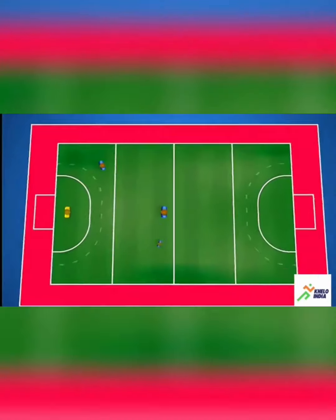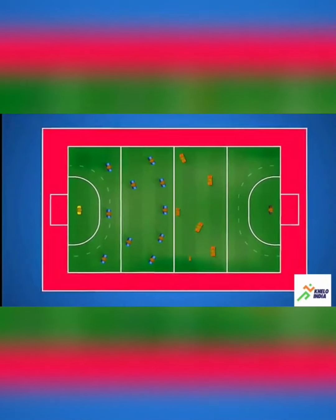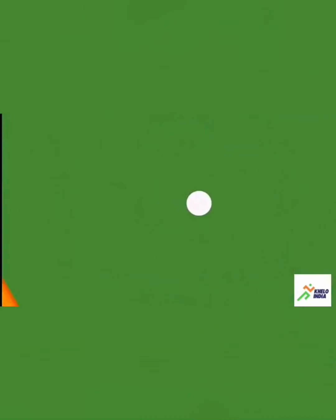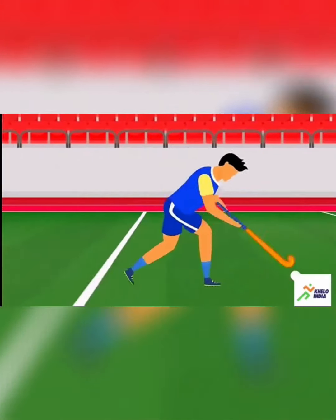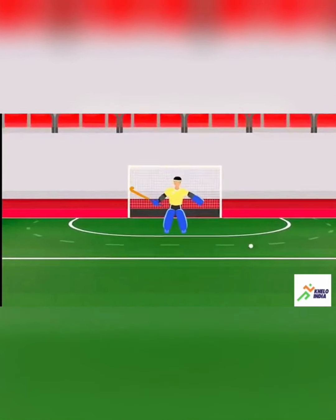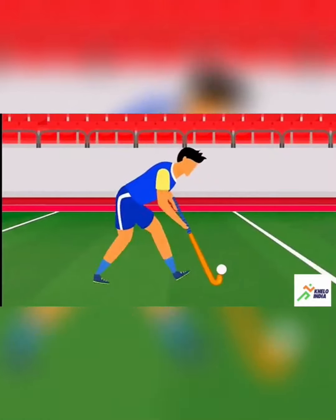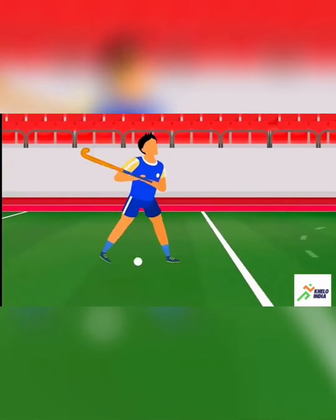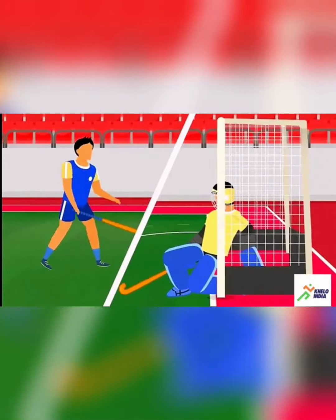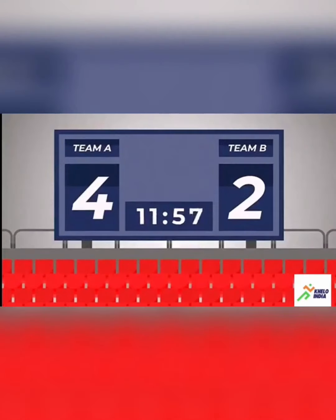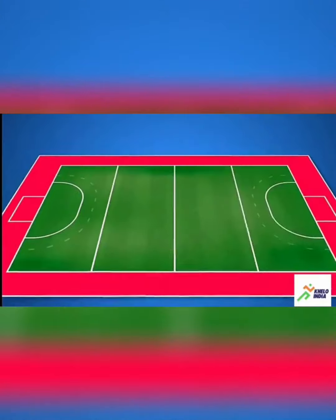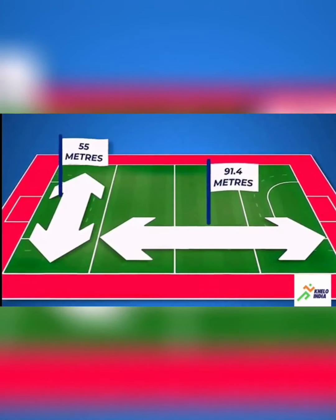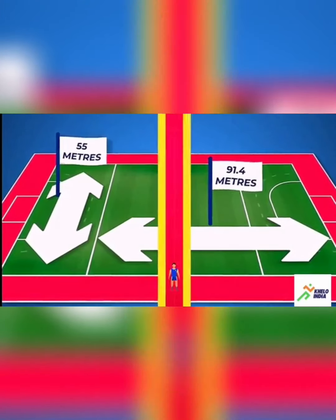Hockey is an outdoor team sport. In a hockey team there are 11 players. The aim of the game is to use the hockey stick to score a goal against the opponent. Scores are counted based on how many goals a team scores. The length of a hockey field is 91.4 meters and the width is 55 meters.